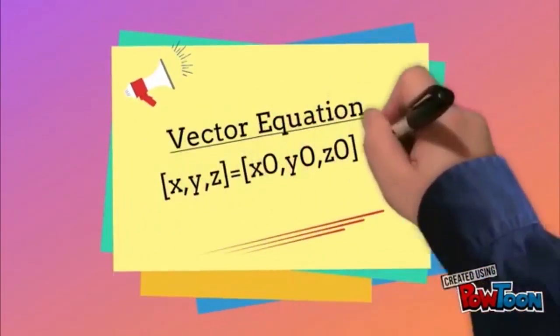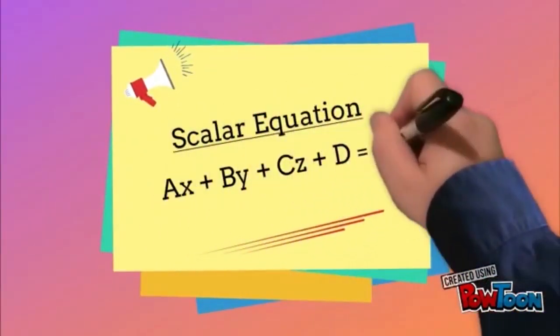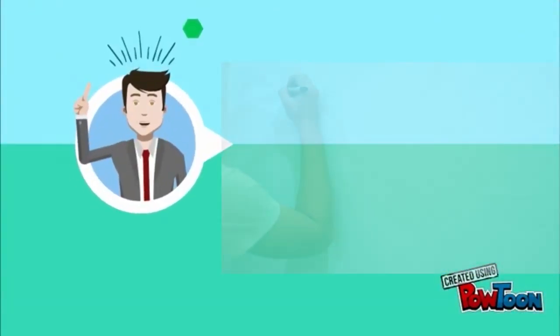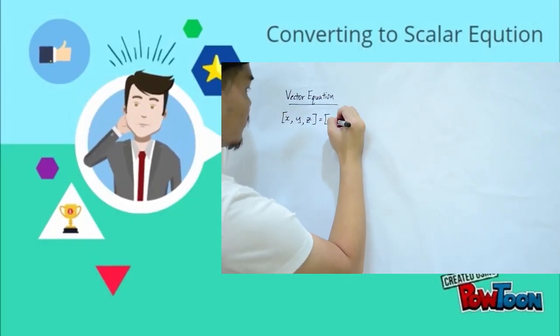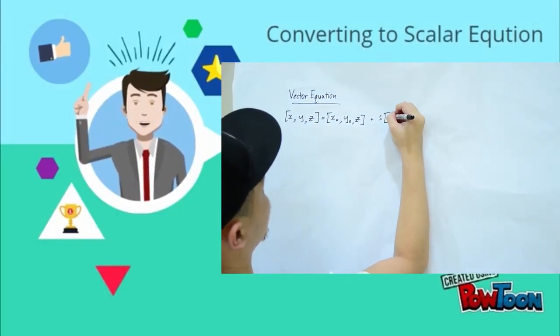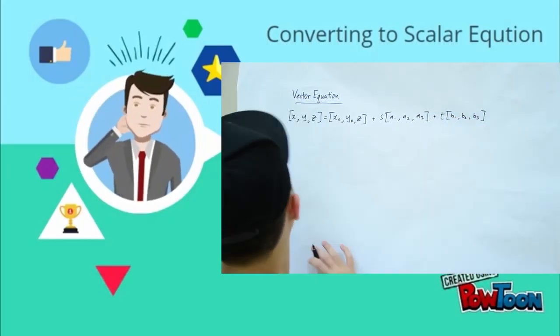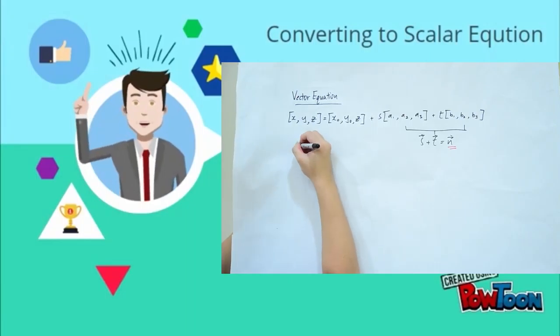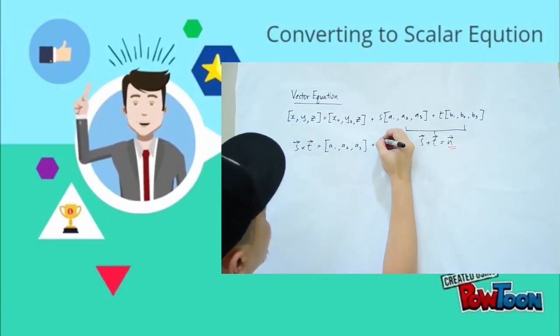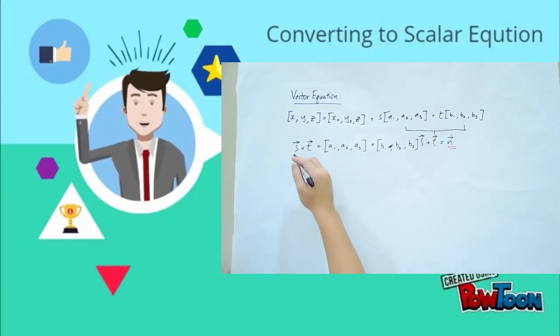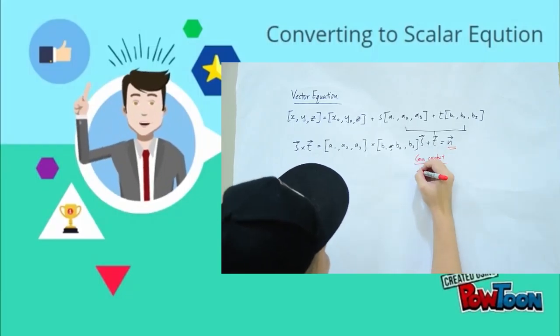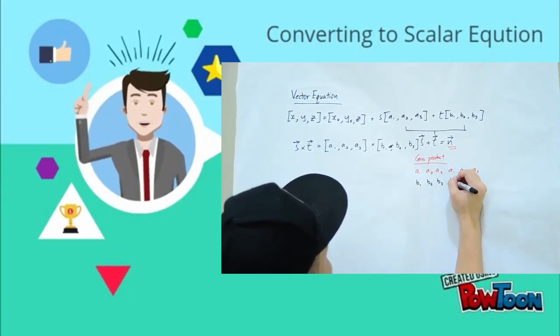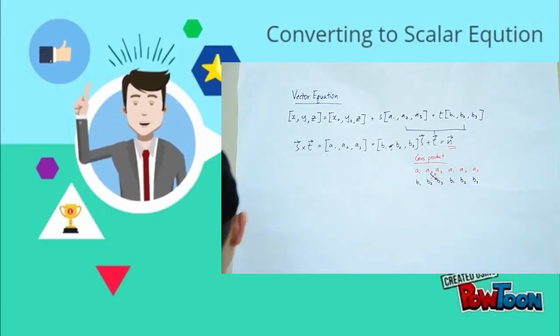In this part of the video, we'll be looking into the topic called the properties of planes. We'll go through what the equations of a plane in three-space are, how to convert from vector form to scalar form, and some practice examples. The vector form and scalar equation form are shown here. The key component of converting a vector equation to a scalar equation is finding the normal vector, and once we find it, we can form our scalar equation.